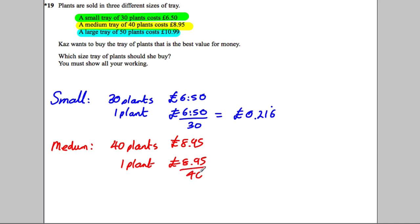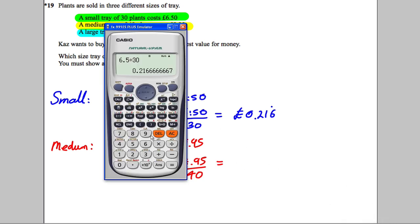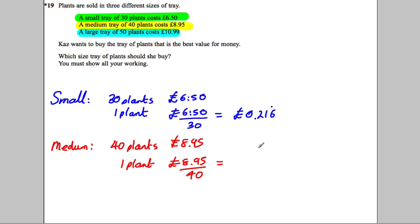£8.95 divided by 40, calculator out, £8.95 divided by 40, and we'd get 0.22375, so 0.22375 pounds.